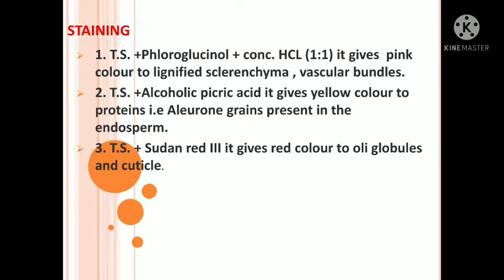After taking the clean transparent section of coriander, we stain the section with staining reagents. First, we use a cleaning reagent and bleaching reagent, then the staining reagents. TS plus Fluoroglucinol plus Concentrated HCl in 1:1 ratio gives pink color to lignified Sclerenchyma and Vascular Bundles. TS plus Alcoholic Picric Acid gives yellow color to proteins, that is Aleurone Grains present in the Endosperm region. The third reagent, TS plus Sudan Red III, gives red color to oil globules and cuticle.